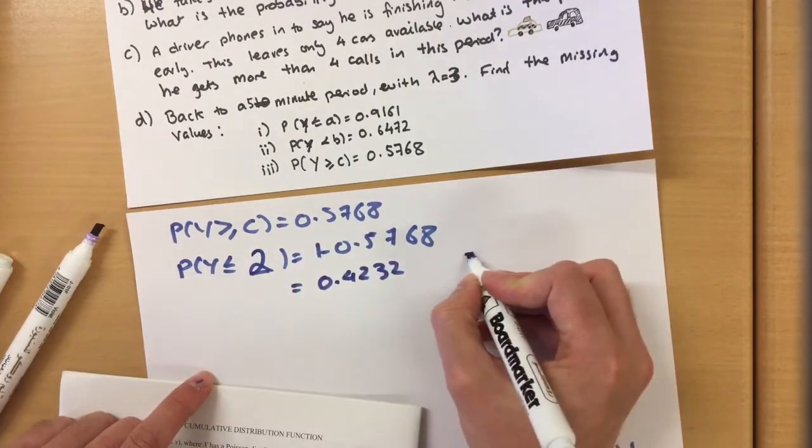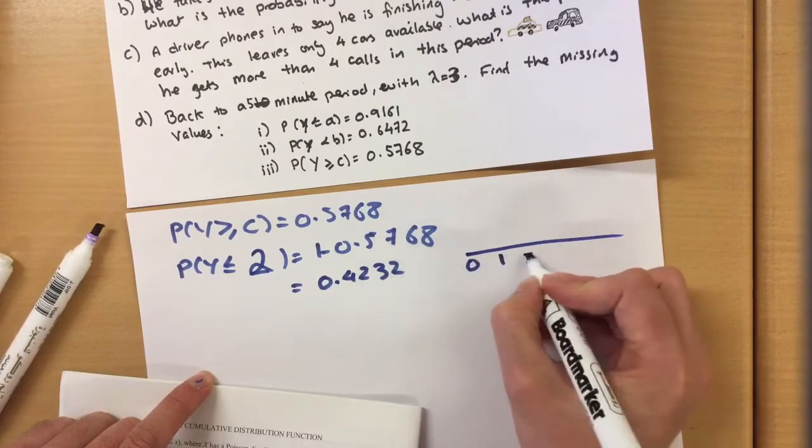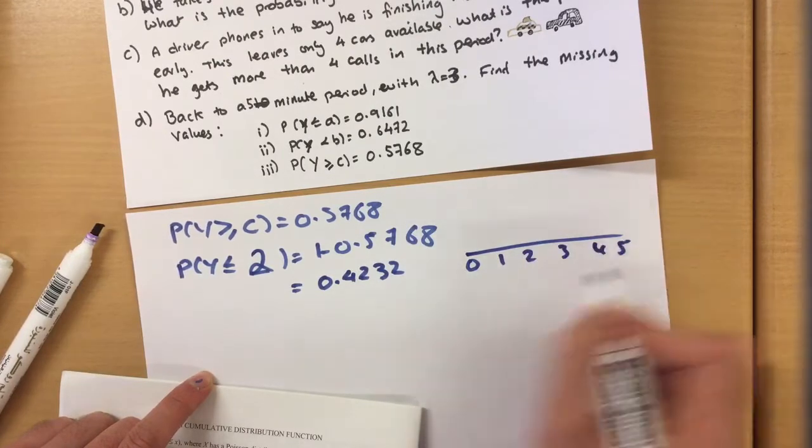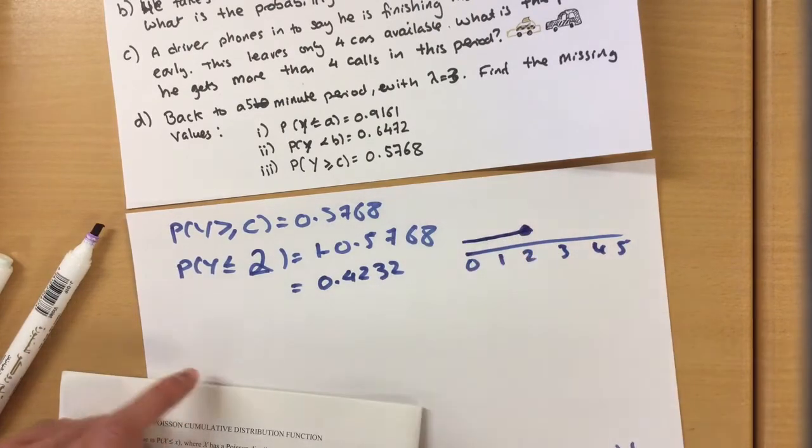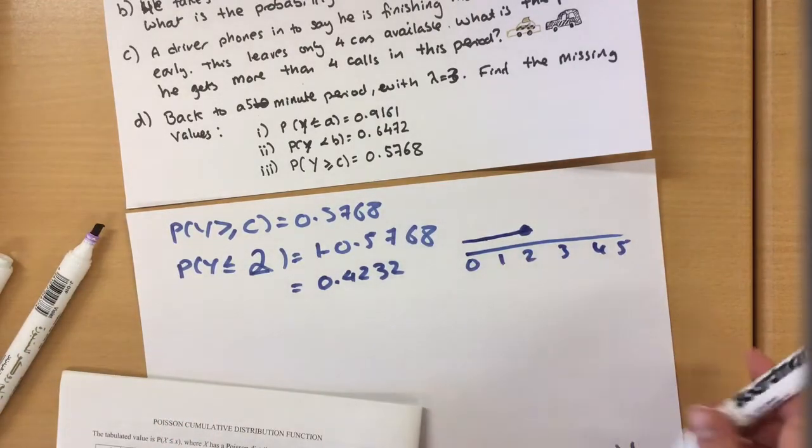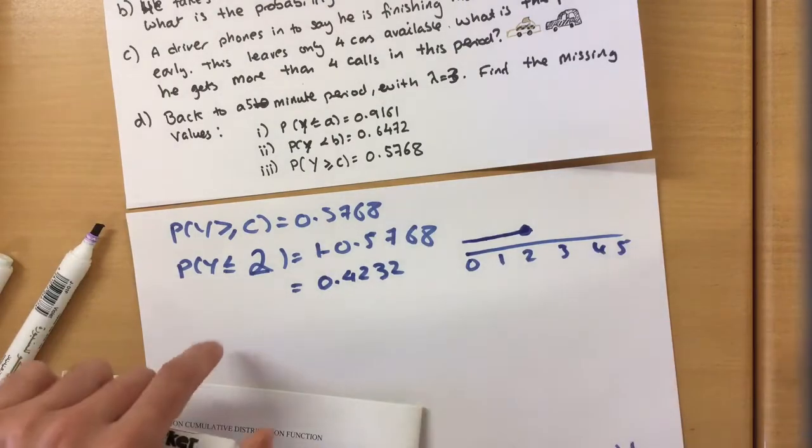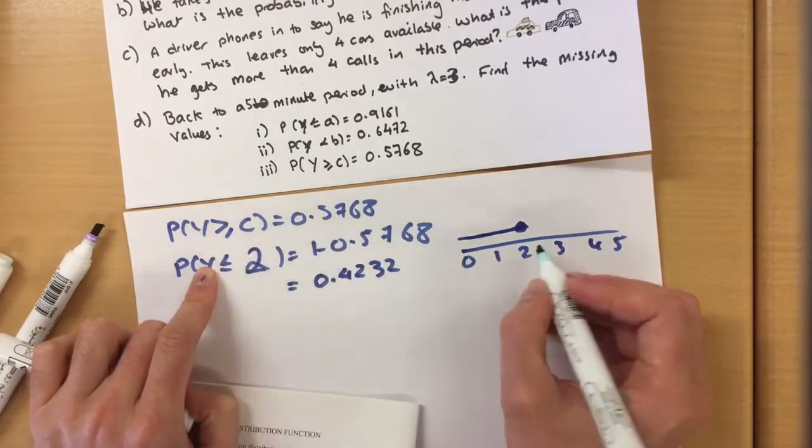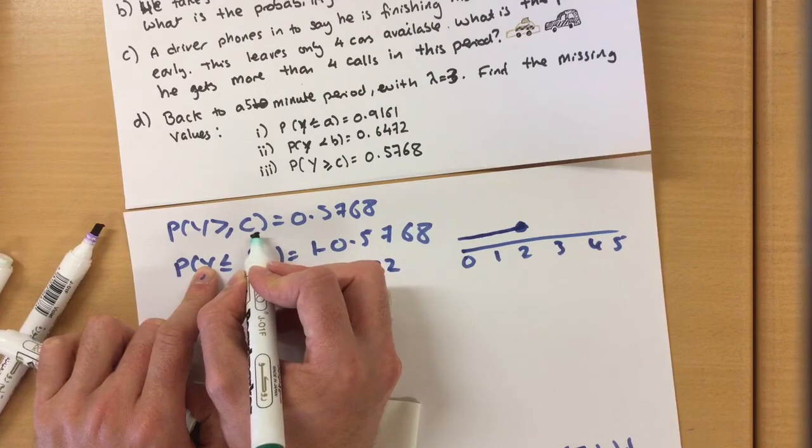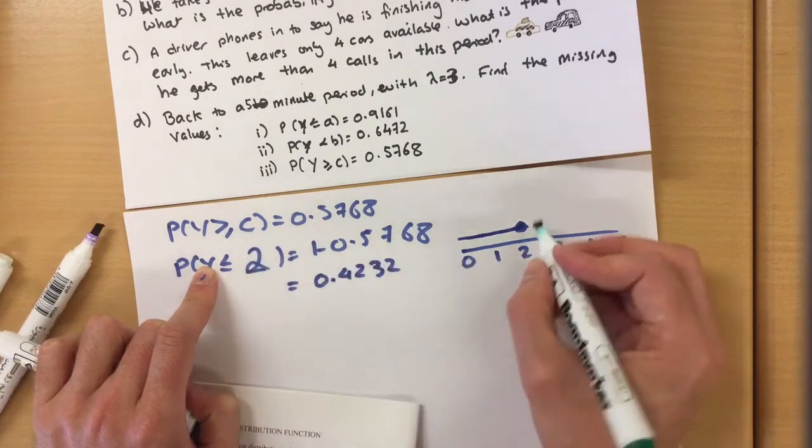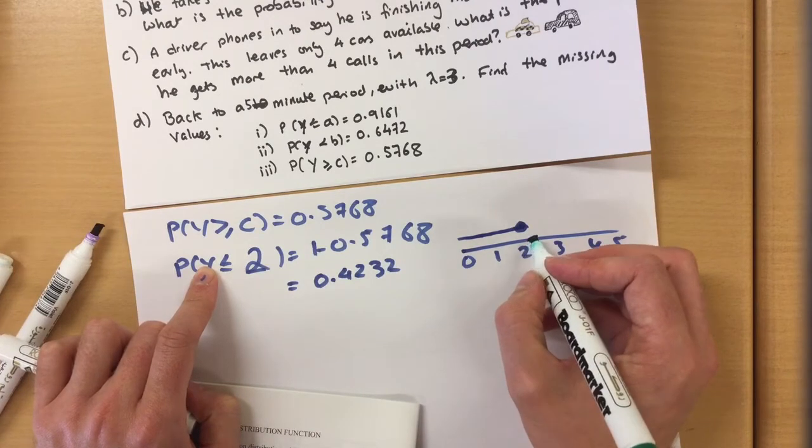Okay, now here's a number line, it's really useful: 0, 1, 2, 3, 4, 5. So we know that this is that there. Okay, now the question asked for the bigger than or equal to c, bigger than or equal to c.